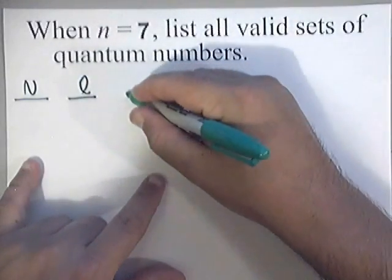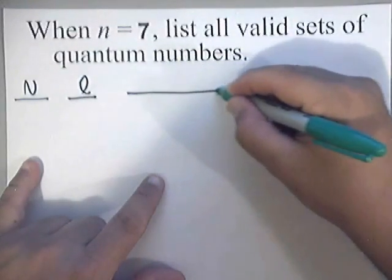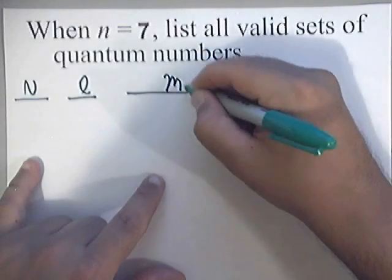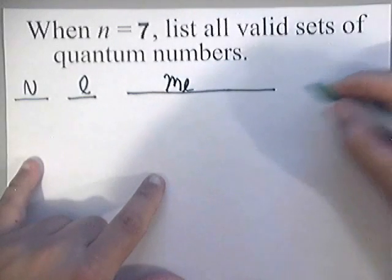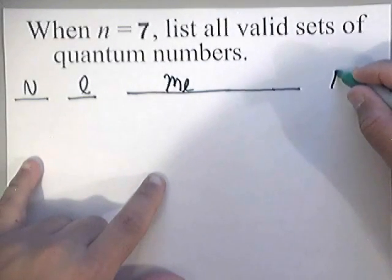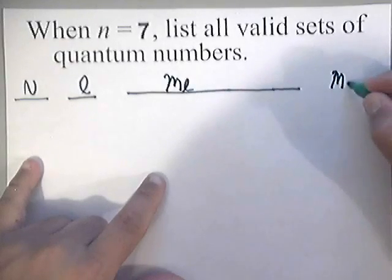Then you'll start with the largest column, which will be the magnetic quantum numbers, which is noted as ml. And then your last column, which is also very small, will be the spin quantum numbers, which will be ms.